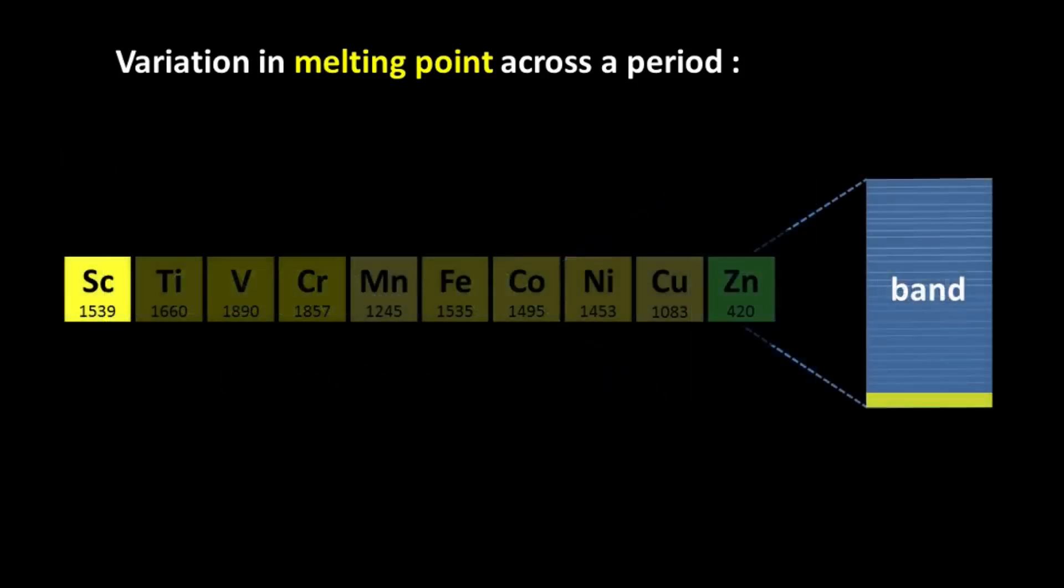Now as we move from scandium to zinc across the 3D series, initially the valence electrons start entering the lower part of the band. And as the valence electron increases, the band starts getting filled up and it actually gets completely filled up by the time we reach zinc. So in zinc, the metallic bonding is weak as the electrons in bonding molecular orbital and anti-bonding molecular orbital almost cancel each other out. So zinc has the lowest melting point in the 3D series.